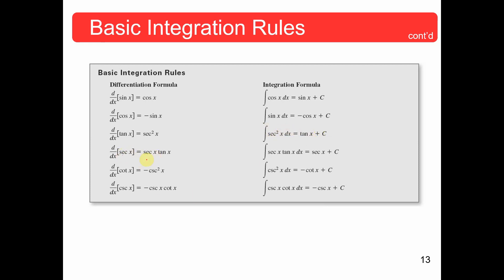The derivative of secant is secant tangent, so the integral of secant tangent is secant. The derivative of cotangent is negative cosecant squared, therefore the integral of cosecant squared is negative cotangent. The derivative of cosecant is negative cosecant cotangent, therefore the integral of cosecant cotangent is negative cosecant. Not forgetting the plus c's all the way around.